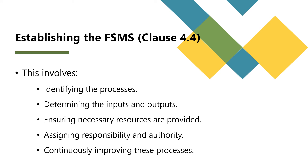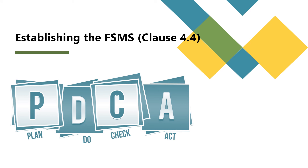Clause 4.4 requires the organization to establish, implement, maintain, and continually improve the food safety management system. This involves identifying the processes included in the system, determining the inputs and outputs of these processes and their sequence and interaction, ensuring necessary resources are provided, assigning responsibility and authority for these processes, and continuously improving them. This continuous improvement is not a separate activity, but a result of an effectively implemented food safety management system. The Plan-Do-Check-Act (PDCA) cycle is a useful tool here, aiding in the maintenance and improvement of the system over time.